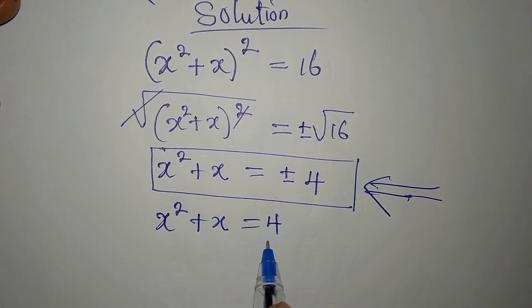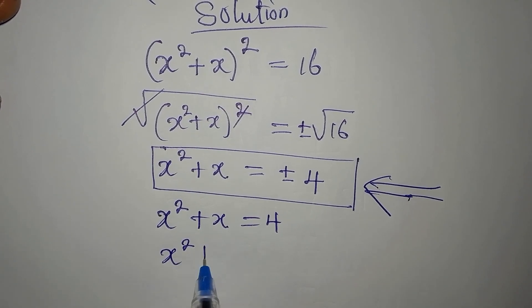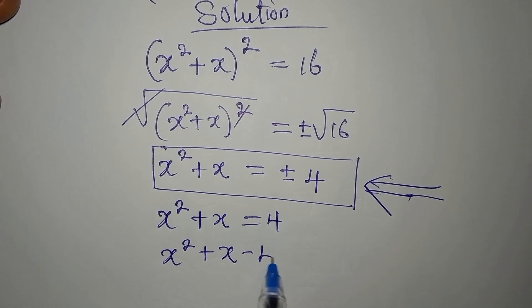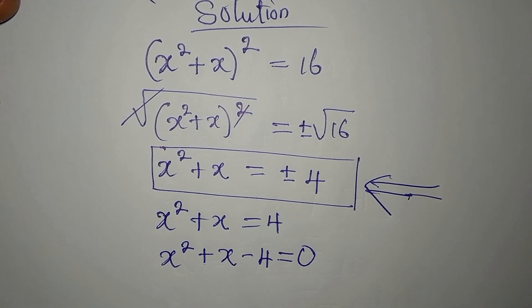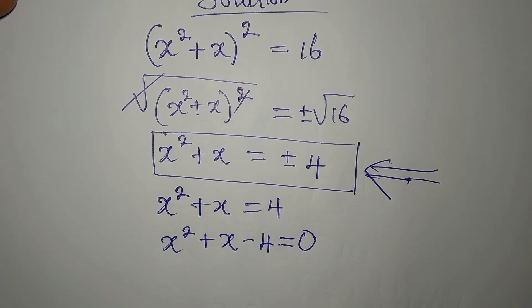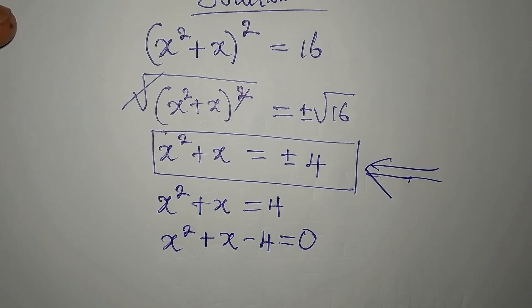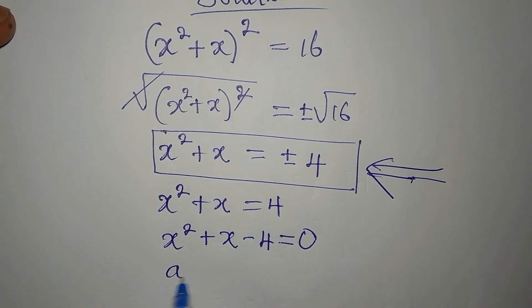Now, this is a quadratic equation. I will bring 4 to the left. x squared plus x minus 4 equals 0. So let's solve this and then we move ahead to the next. Now, what do we do? Let's use the formula for this. For the formula,